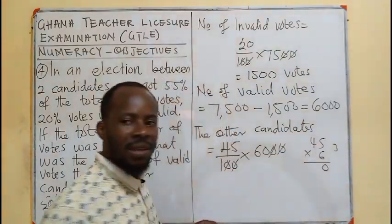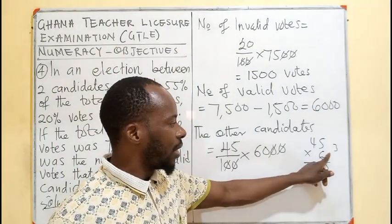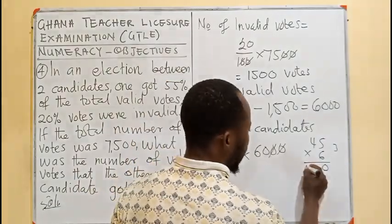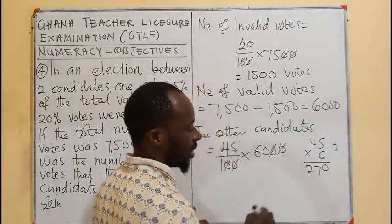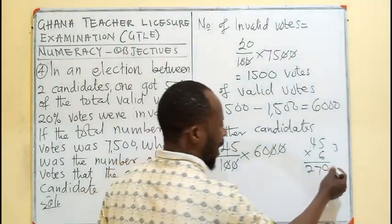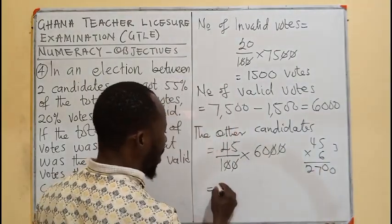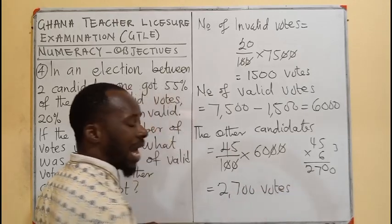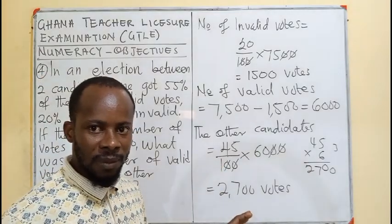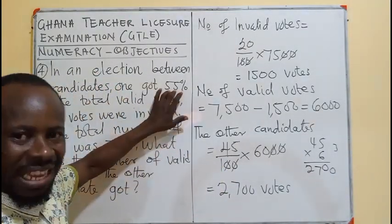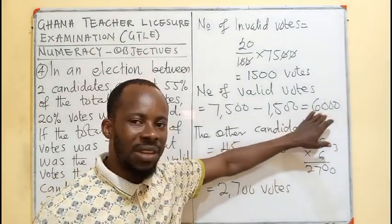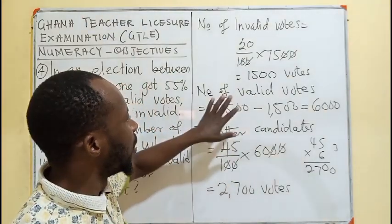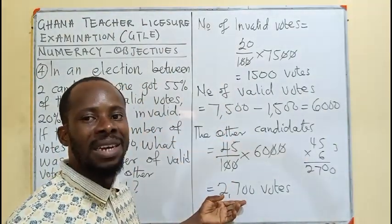Let's take 45 times 6: 5 times 6 is 30, carry 3; 4 times 6 is 24 plus 3 gives 27. With the zero added, the other candidate has 2,700 votes. You can also find 55% of 6,000 to get 3,300, subtract from 6,000 and still get 2,700. But to save time, we go for this approach.